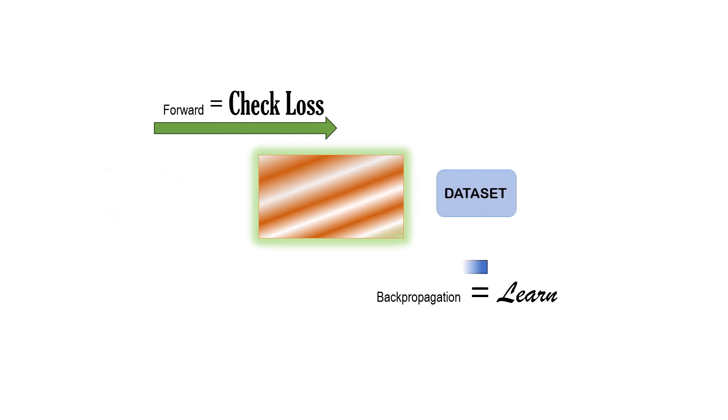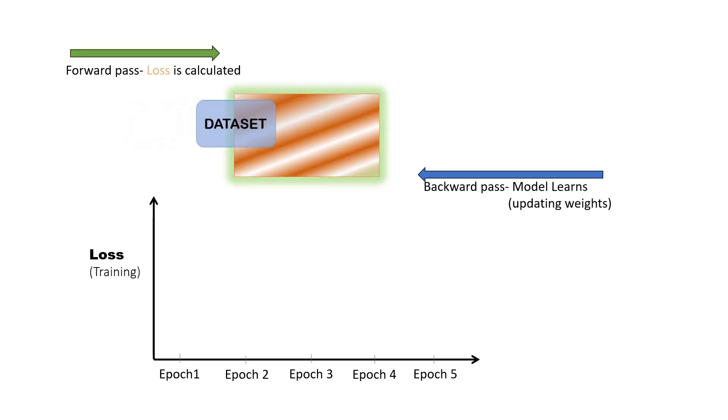When we send the data forward into the model, we are checking how much mistake it is making on the data, aka training loss. When we send it backwards, known as backpropagation, the model actually learns. So forward and backpropagation is check and learn.